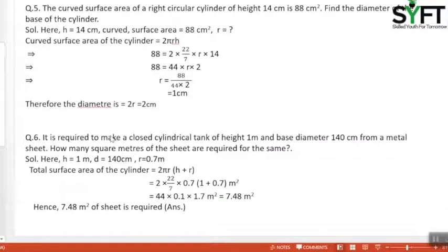Question. The curved surface area of a right circular cylinder of height 14 cm is 88 cm². Find the diameter of the base of the cylinder. So here, H equals 14 cm, curved surface area equals 88 cm², and R is to be found first.